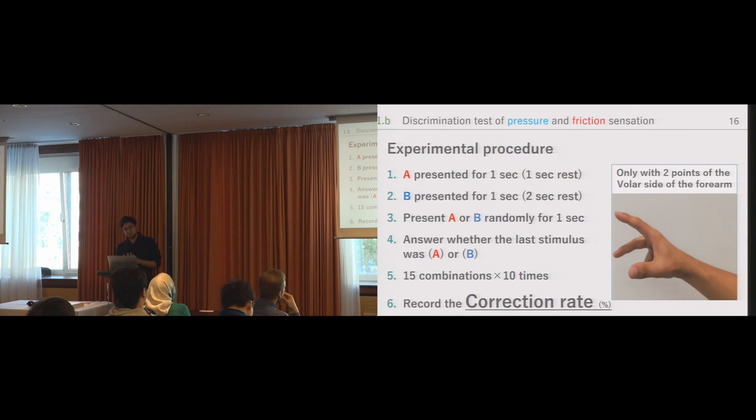The next experiment is about discrimination test of pressure and friction sensations. We call it mixed condition. In this mixed condition we limited the presentation to two locations on the dorsal side to shorten the experiment. These two points corresponded to the index finger and middle finger. For example, it was confirmed whether the pairs could be discriminated and the experiment procedure is same as before. A was presented for one second followed by one second rest. B was presented for one second followed by two second rest and A or B was presented randomly. The participant was asked whether the last measure was A or B and then we reported the correction rate. 150 trials were conducted in this experiment.